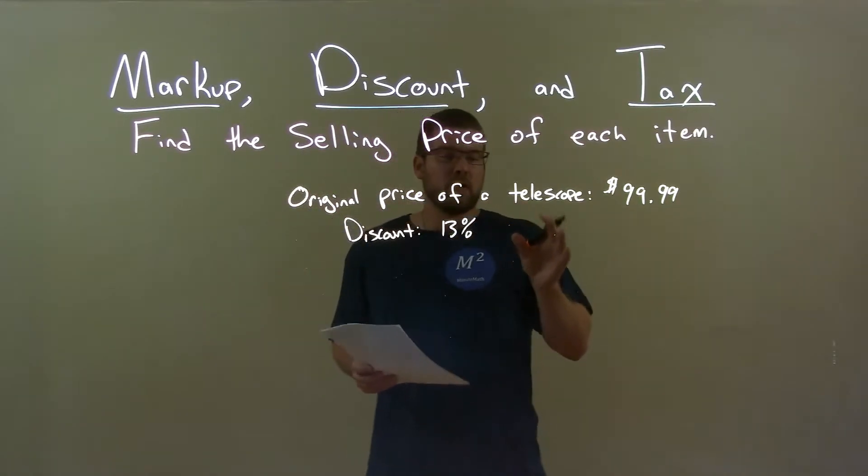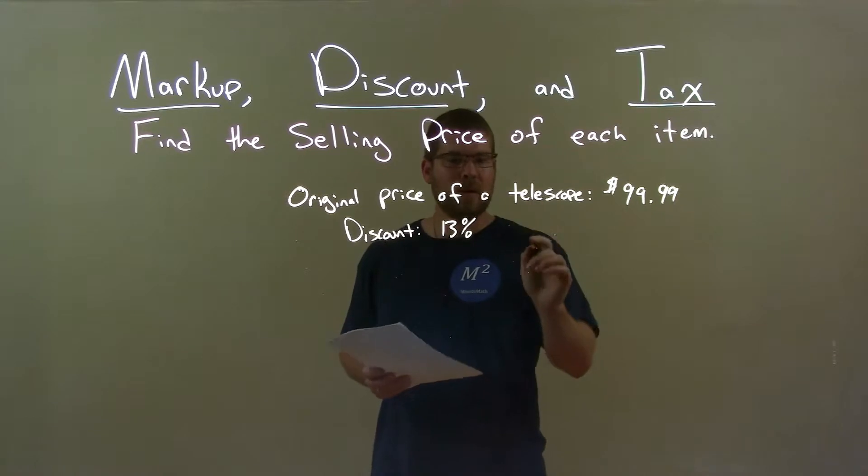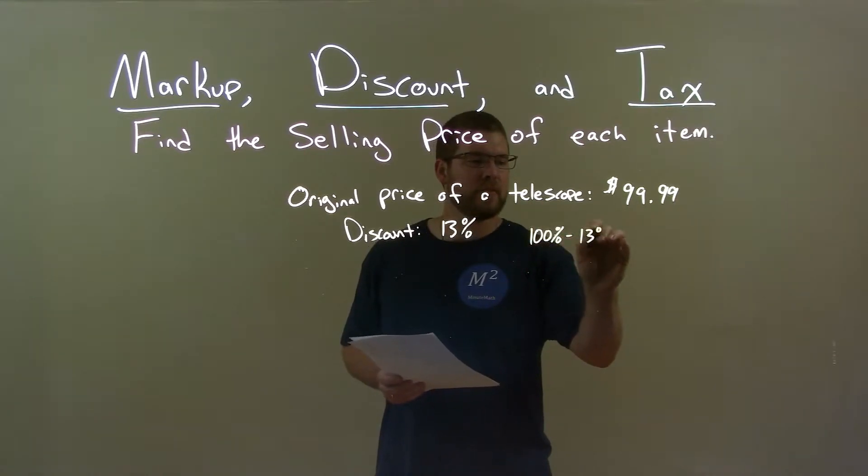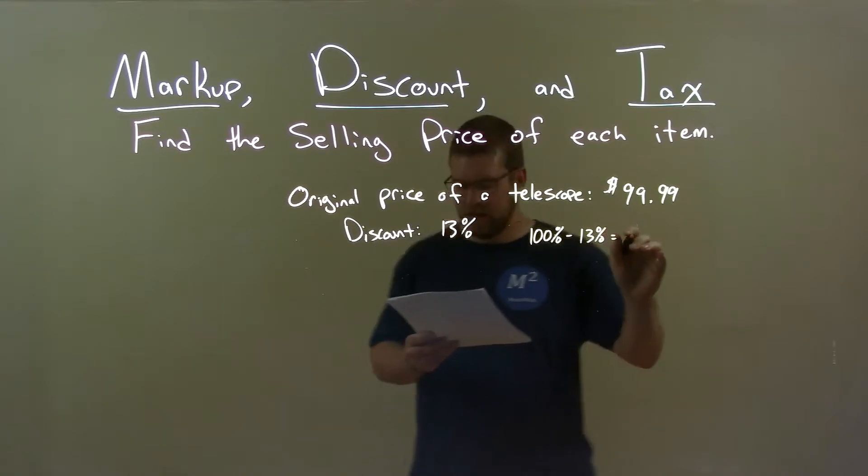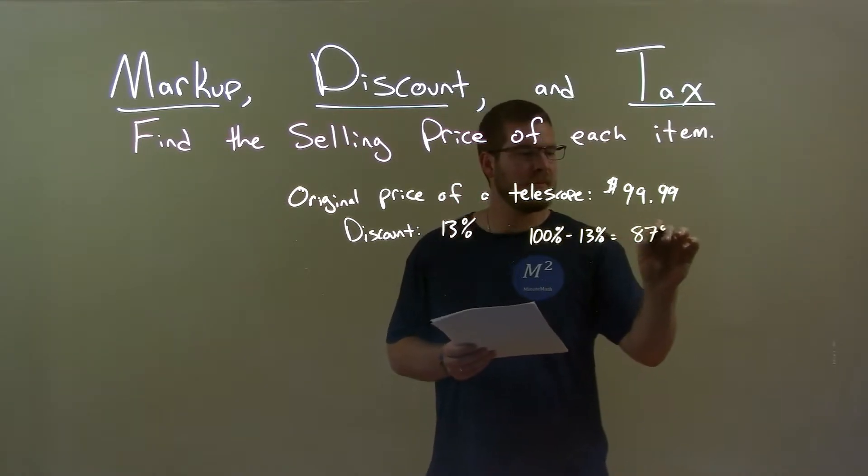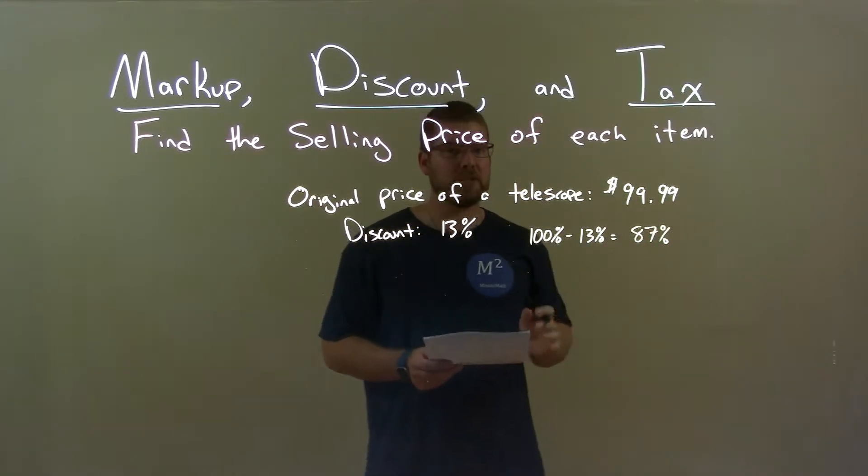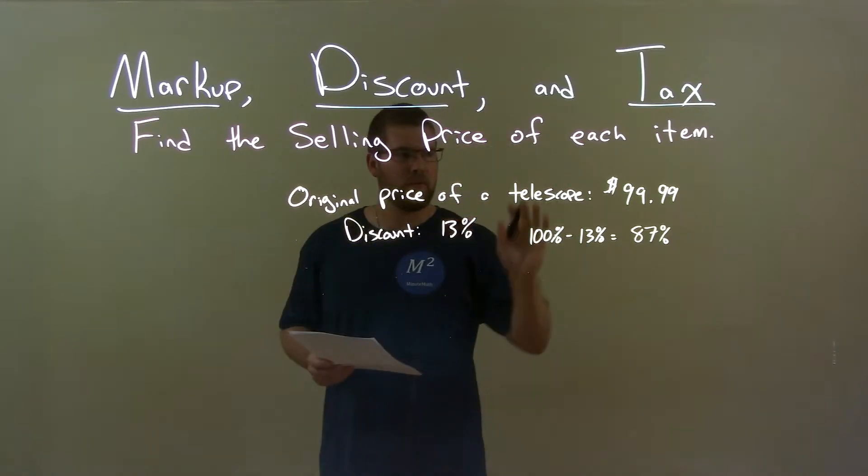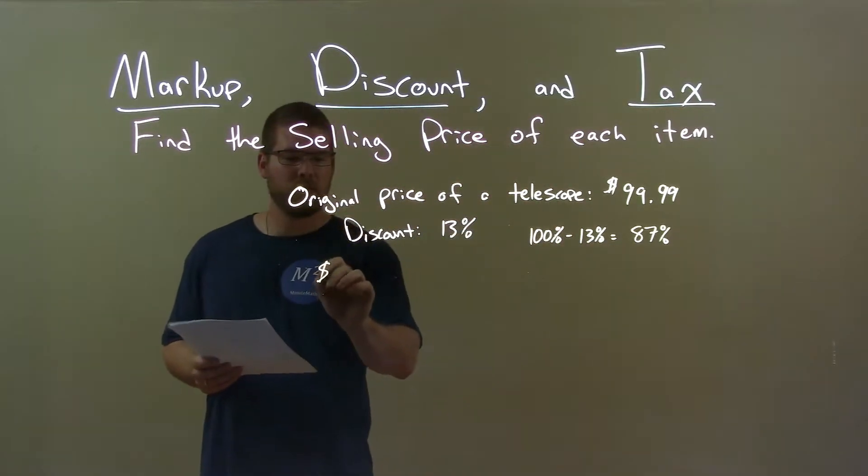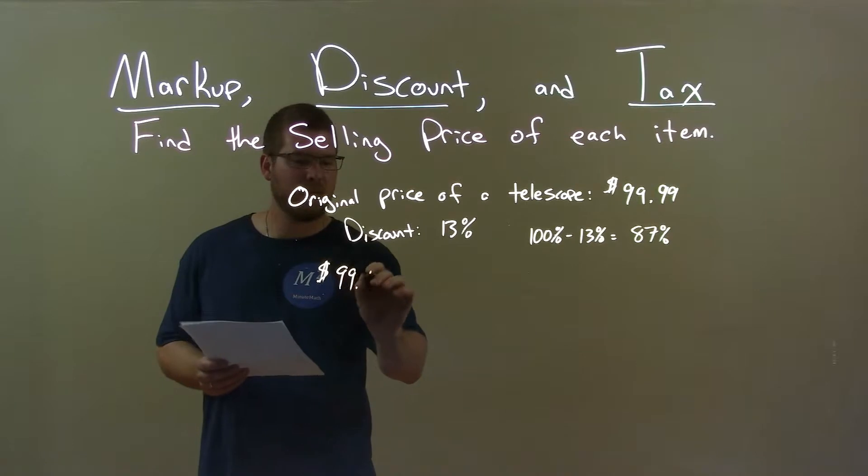Well, to find what total price we're going to pay, what we need to do is take 100% and subtract the 13% discount from it. That gives us 87% of the total price we're actually going to pay, okay? So, with that information, we start with the original price, $99.99.